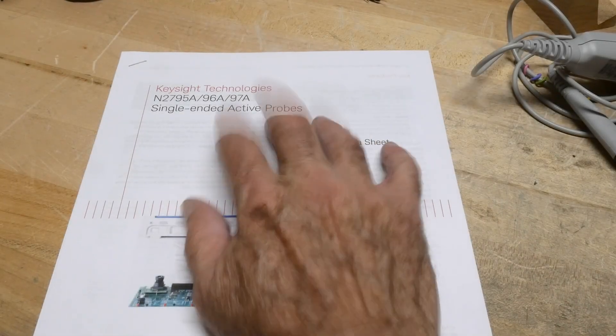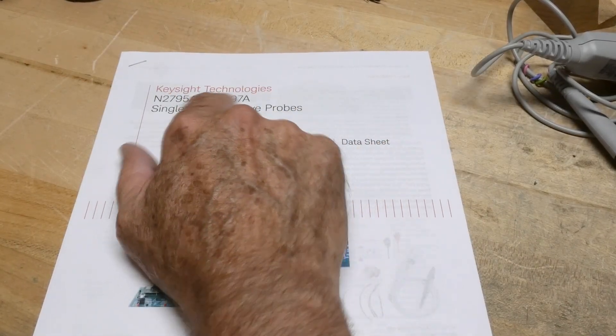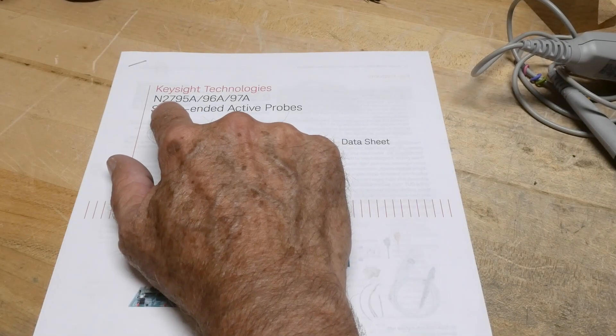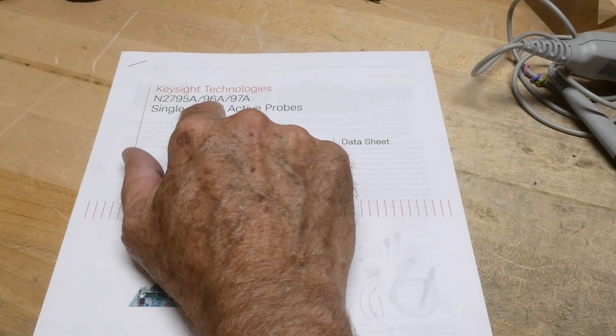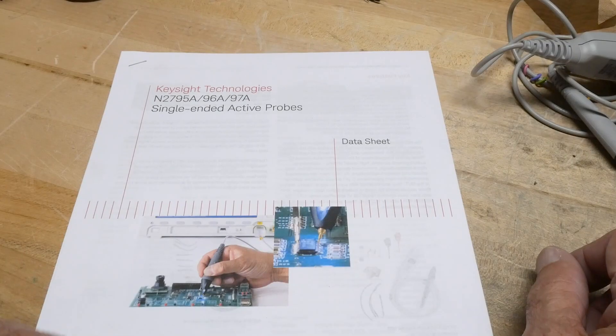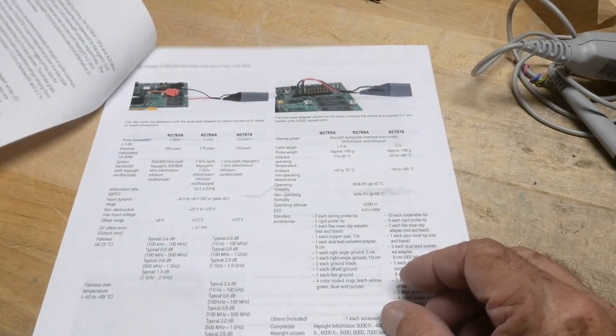All right, this is part two. I'm gonna look at the data sheet here. Keysight makes the 2795, 2796, and 2797, and this is the data sheet for those.